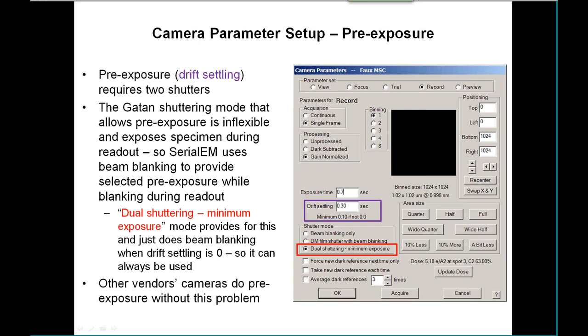Long ago, I developed this method of using beam blanking both to provide the pre-exposure before the actual exposure that you want and also to provide blanking during readout. If you have drift settling and have this dual shuttering minimum exposure selected, it will use that method and provide just the amount of exposure that's needed.